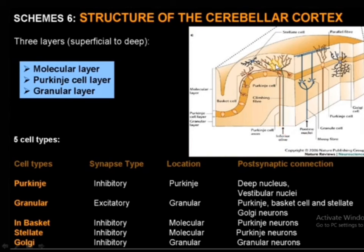We can see that these Purkinje cells ascend up to the molecular layers and form profuse branching, getting connected with the basket and stellate cells. Axons of the granular cell layers ascend up to the molecular layers and run parallel to the long axis, called parallel fibers. These parallel fibers again connect with the dendrites of the Purkinje cells.